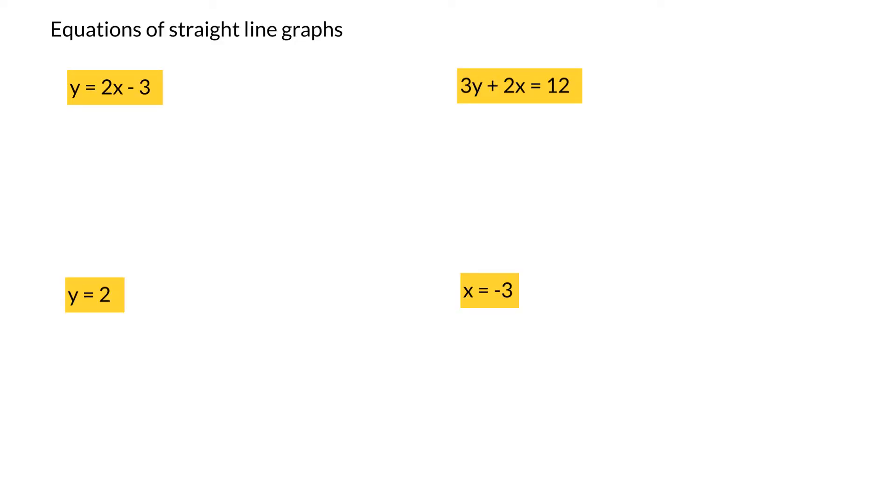Now the standard form for a straight line graph is y equals mx plus c, or you might see that as y equals ax plus b. They could use different variables but normally the x and the y stay the same. So if we look at the components of the equation, the m refers to the gradient and the c value refers to the y-intercept.